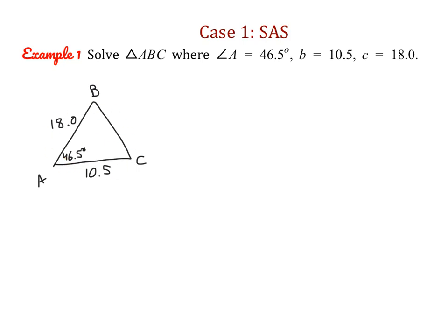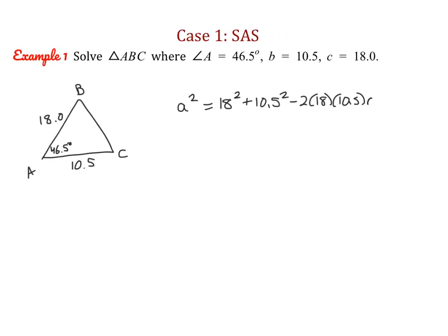Looking at what we have, we're not able to use law of sines, which we learned in the last lesson. To use law of sines, you need a pair of angle and opposite side that you know. So this is a perfect case where we use law of cosines instead. We set up the equation: A squared equals B squared plus C squared minus 2 times B times C times cosine of angle A, which is 46.5 degrees.